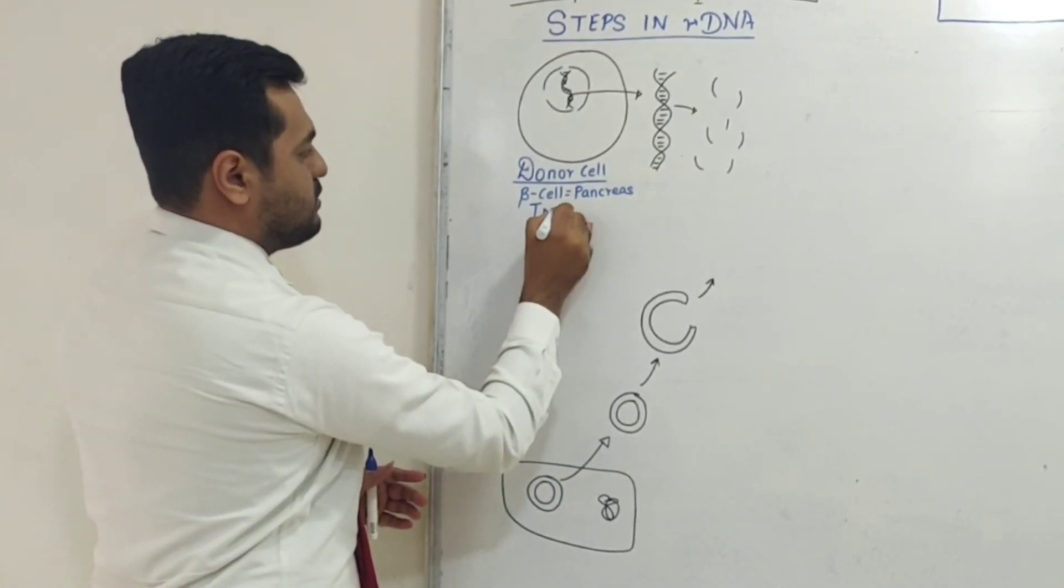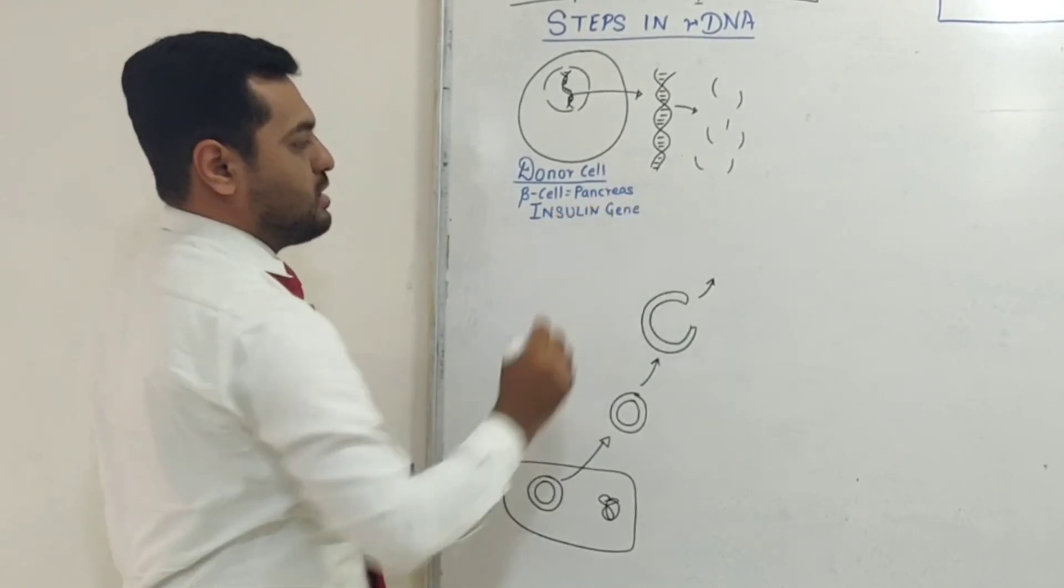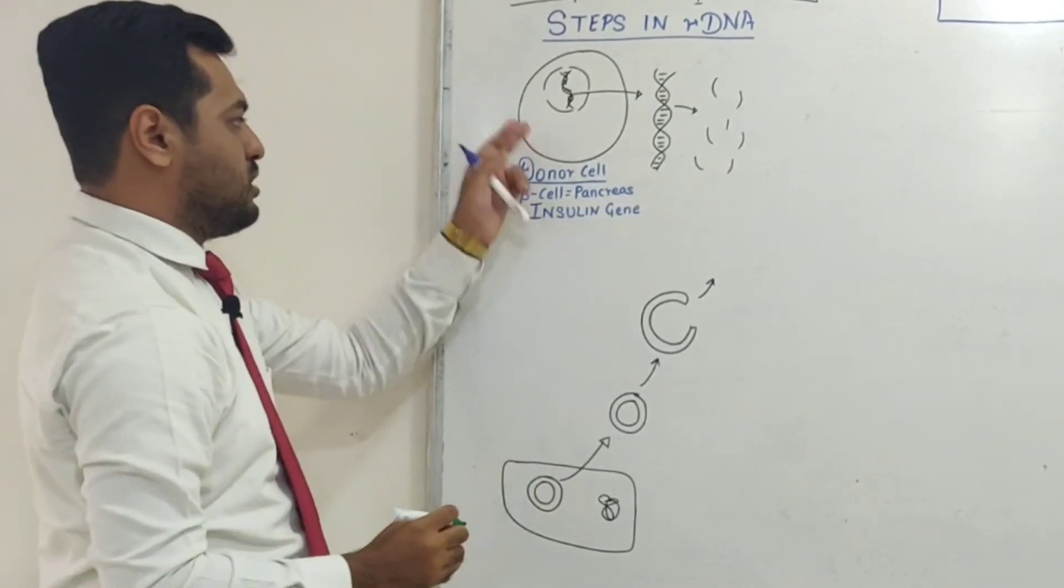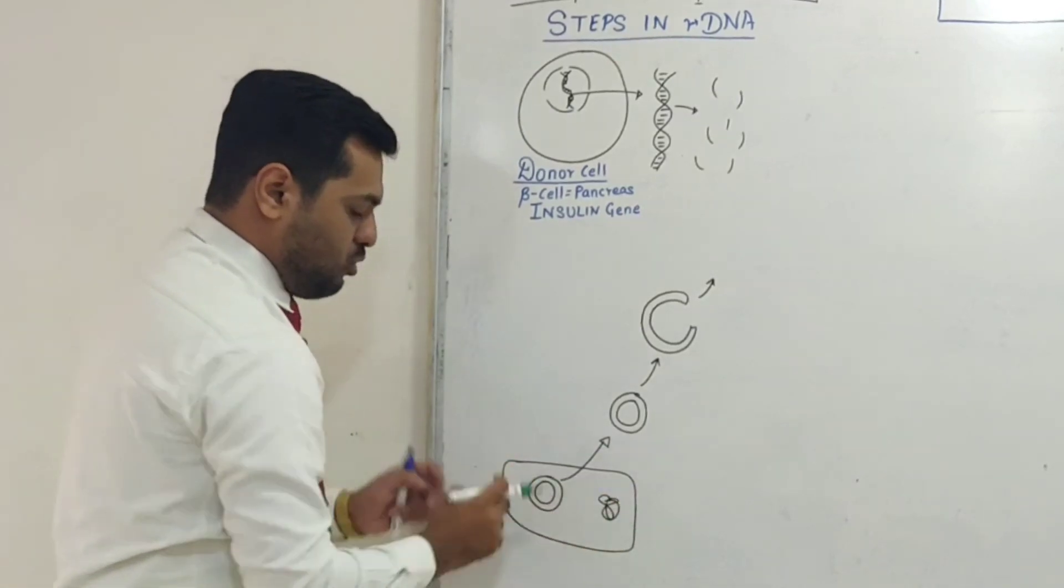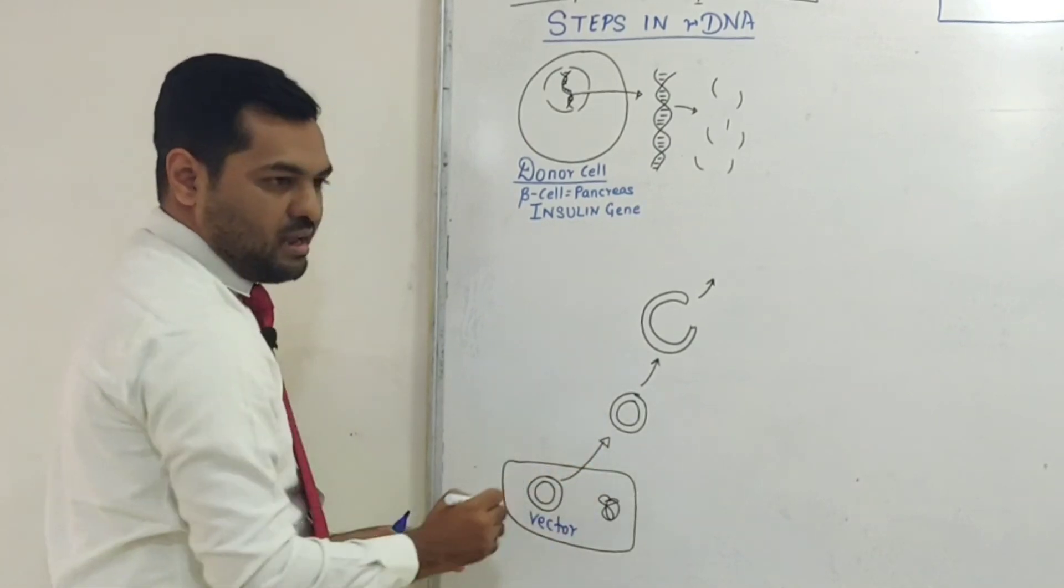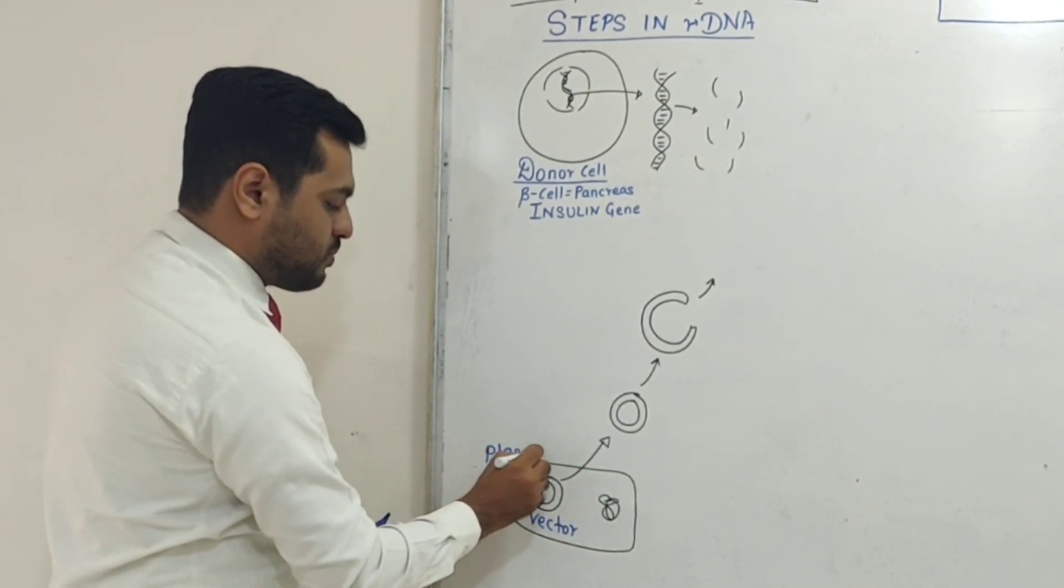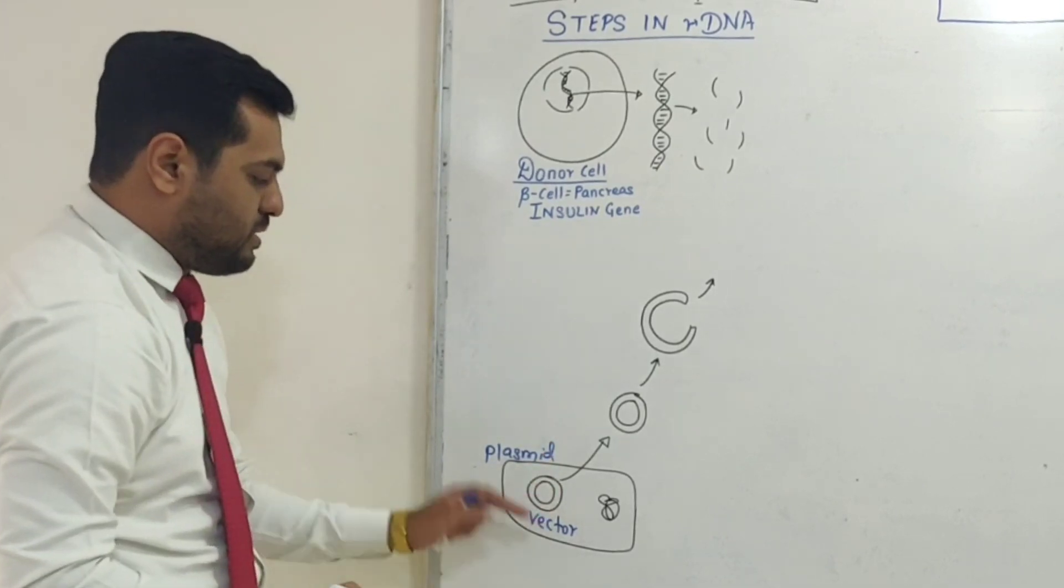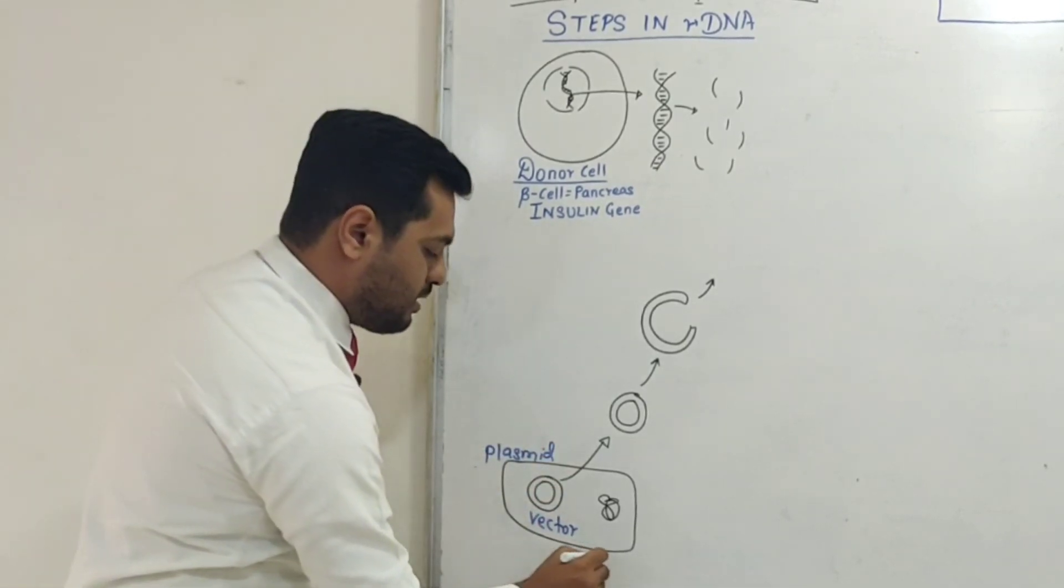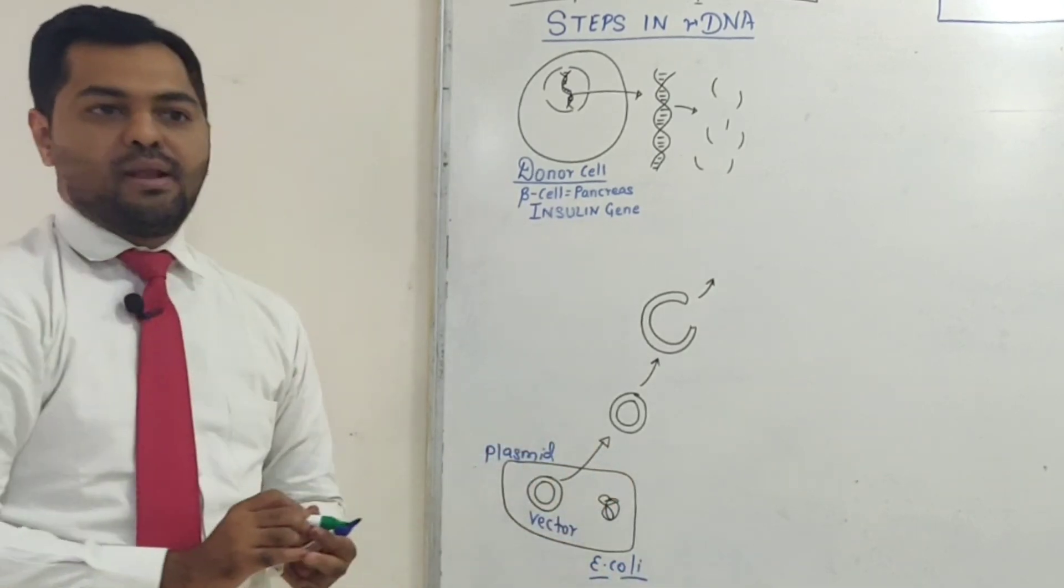This donor cell has the insulin gene. Now we take a vector organism from which we will extract the vector. This is a plasmid. The organism from which we take this plasmid is the bacteria E. coli. We will use E. coli's vector plasmid.